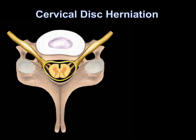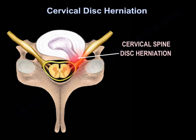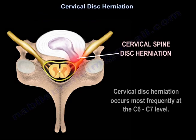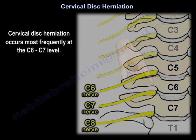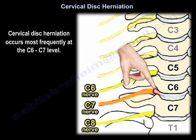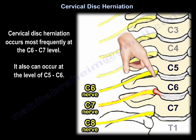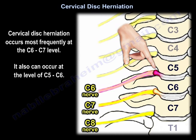Cervical disc herniation. Cervical disc herniation occurs most frequently at the C6-C7 level. It also can occur at C5-C6.